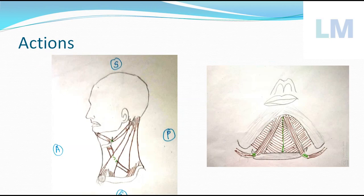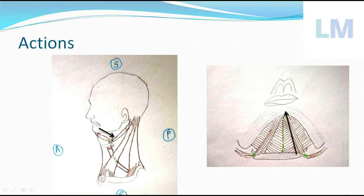The action of this digastric muscle is very simple and interesting. Acting from the level of the hyoid bone, it can pull the mandible down — that is called depression of the mandible, in the act of opening the mouth. Acting from the mandibular level, it will pull the hyoid bone upwards — that is called elevation of the hyoid bone, in the act of deglutition.